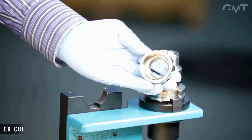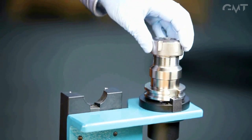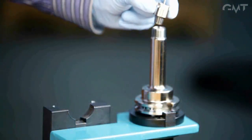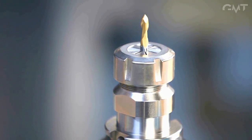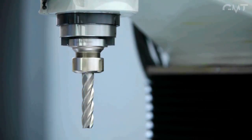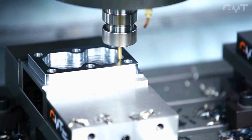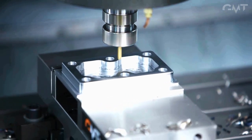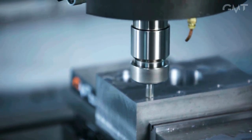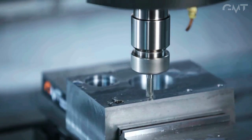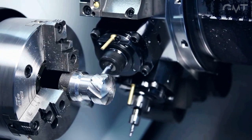An ER collet chuck consists of a collet nut, a collet, and a tapered socket. ER collets have very wide gripping ranges allowing the chucks to hold many different sizes and types of tools. Thanks to their high concentricity and versatility, they are also frequently used in live tooled lathes.